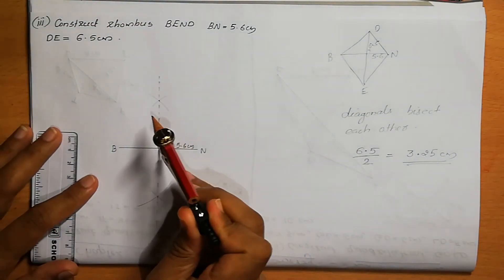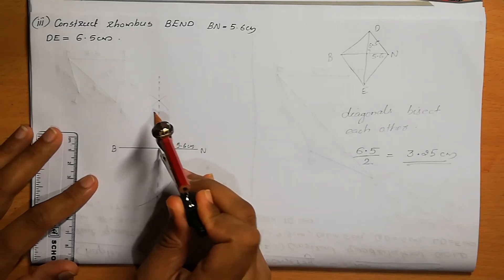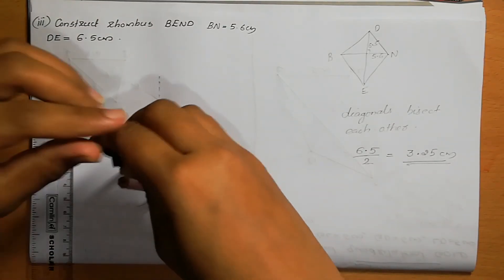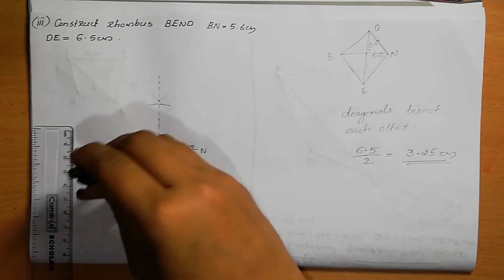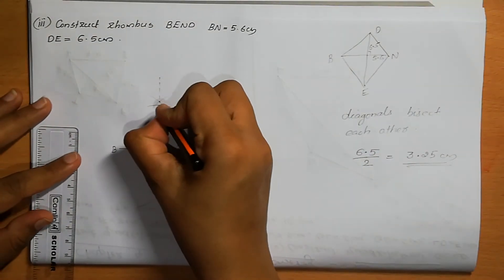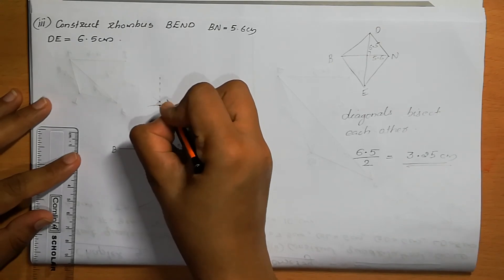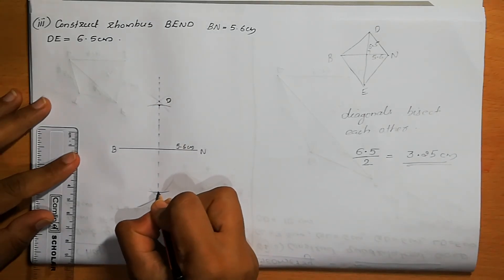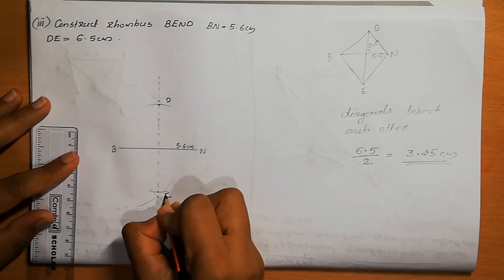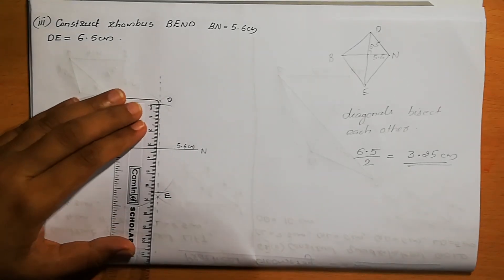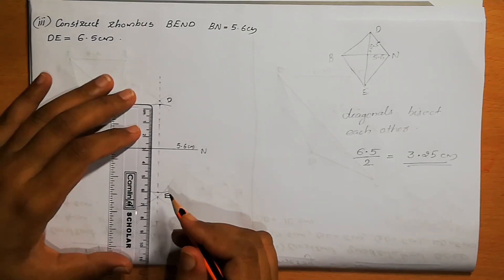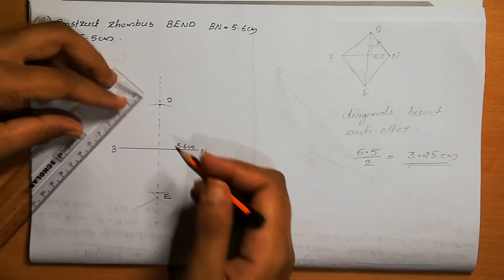From the centre point, we can draw an arc of 3.25 cm above and below. That point of intersection on the perpendicular bisector is called D on one side, and E on the other — it is intersecting on the perpendicular bisector at point E. We can check the full length is 6.5 cm. Yes, the full length is 6.5 cm, so our construction is correct.